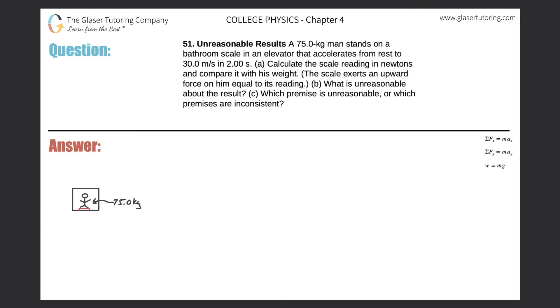Number 51, unreasonable results. A 75 kilogram man stands on a bathroom scale in an elevator that accelerates from rest to 30 meters per second in two seconds. Letter A: calculate the scale reading in newtons and compare it with his weight. Okay, so here I have a little picture. The man is in an elevator, he weighs 75 kilograms, and we have a scale down here on the bottom.